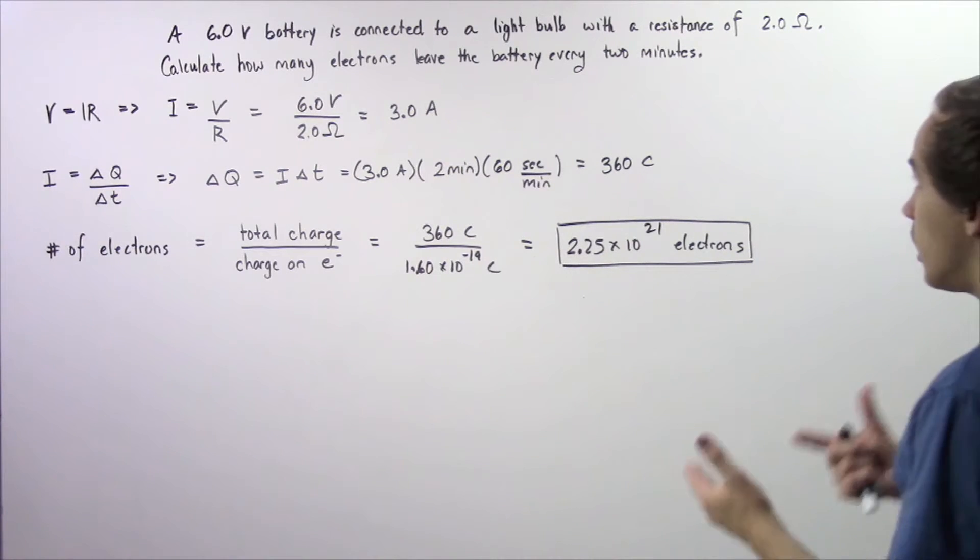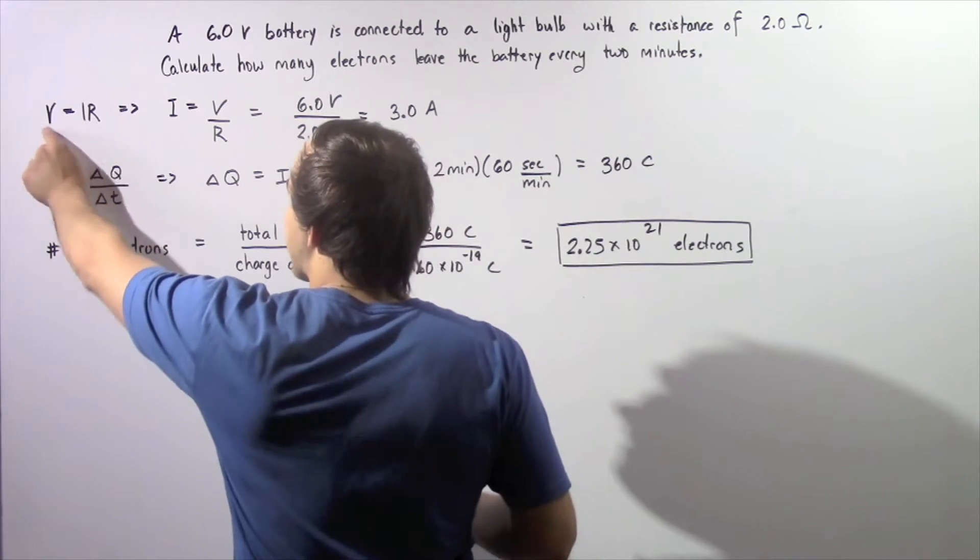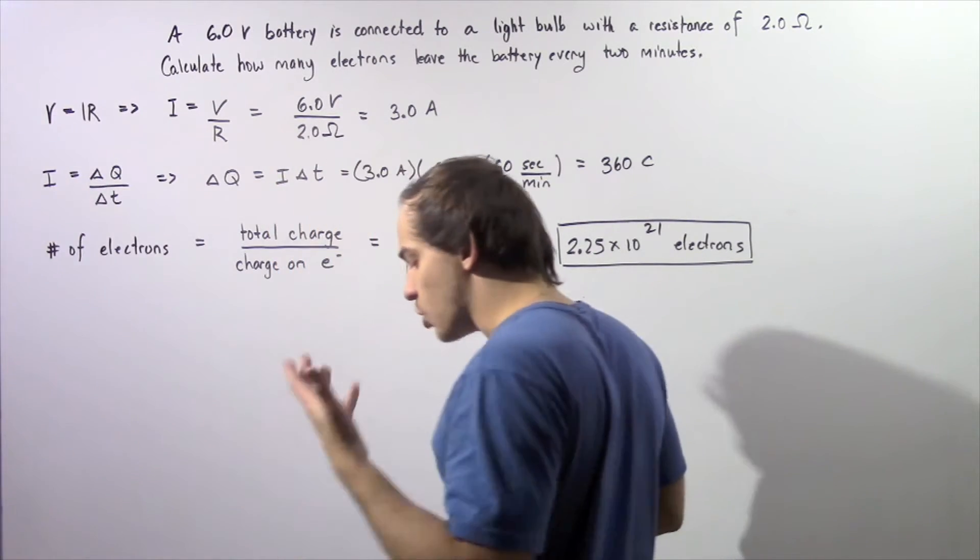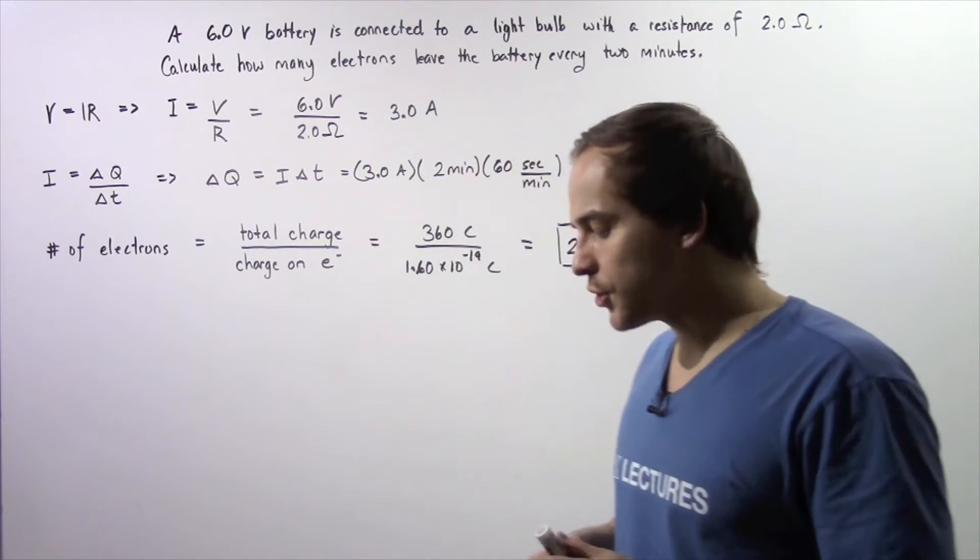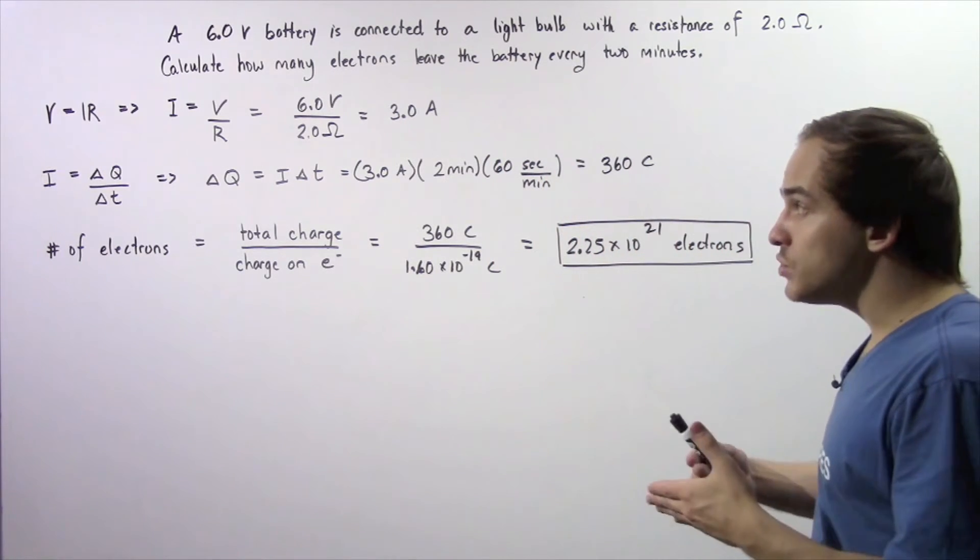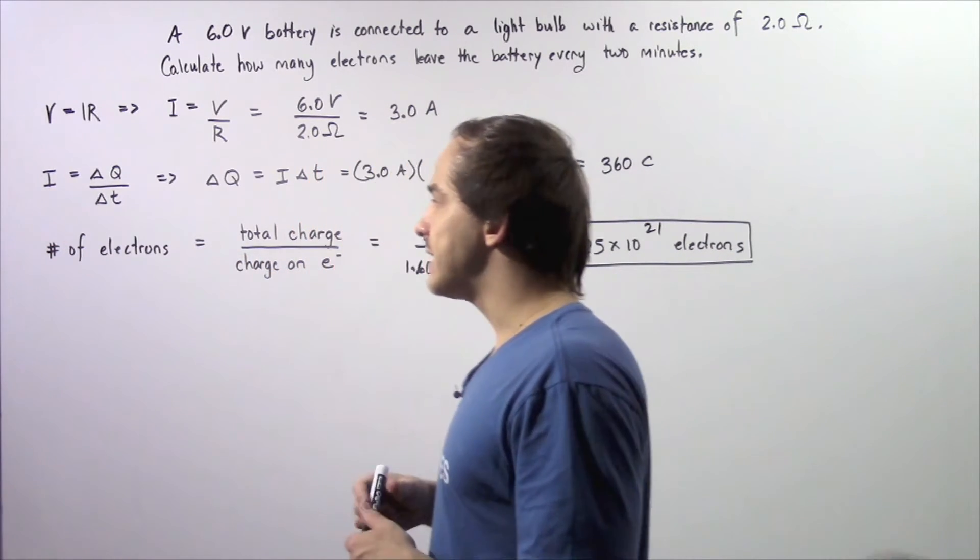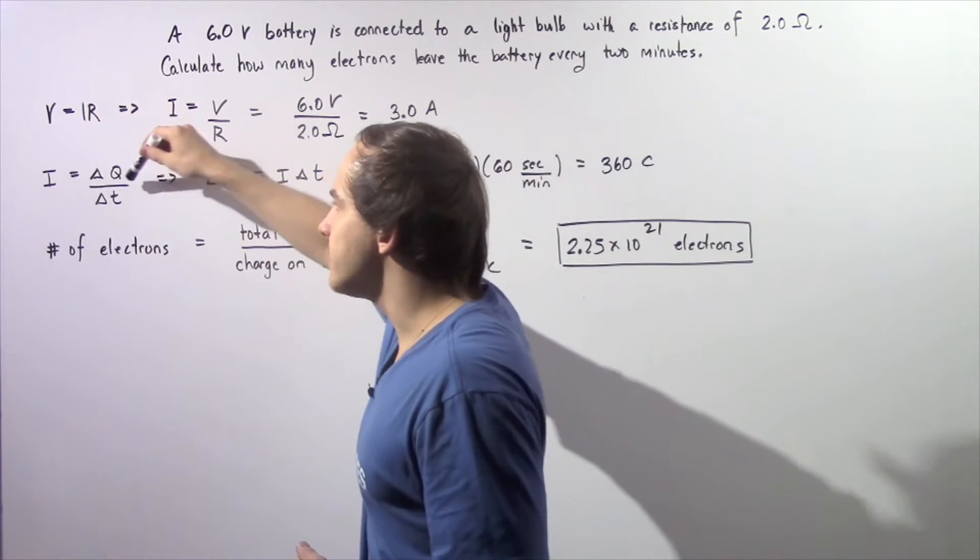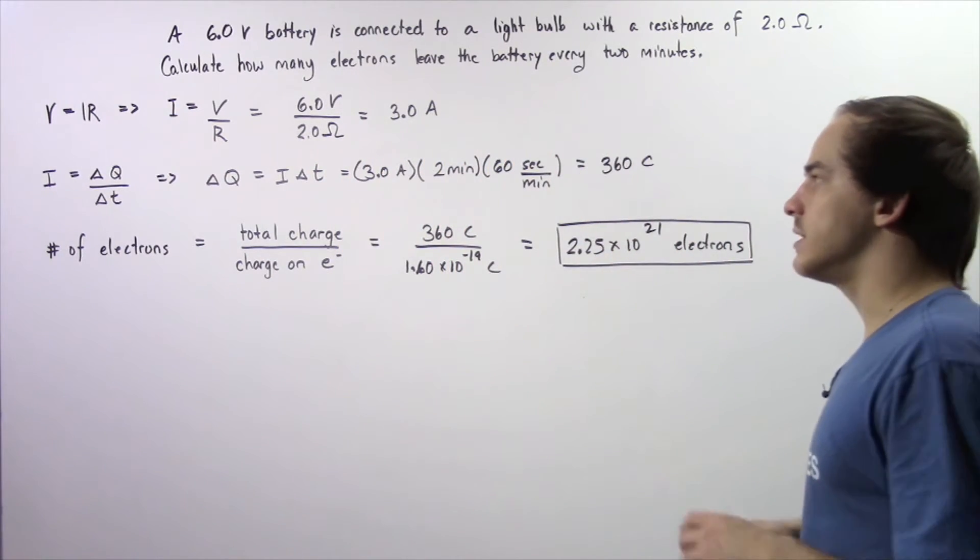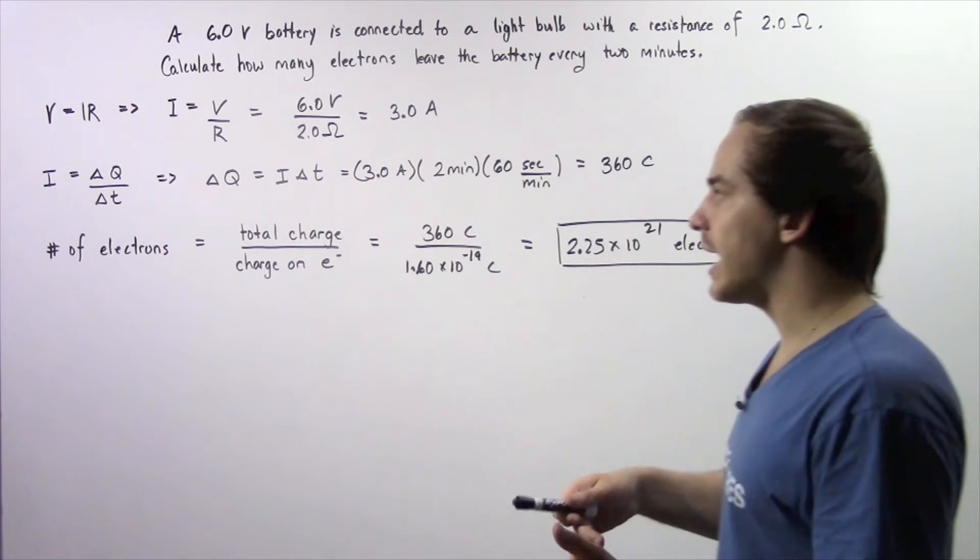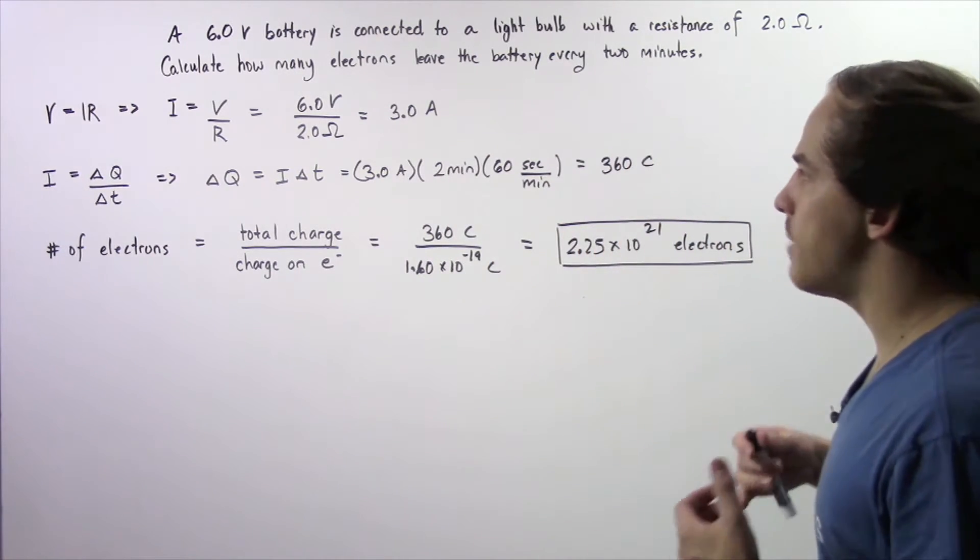Calculate how many electrons leave the battery every single 2 minutes, or 120 seconds. We want to use Ohm's Law to calculate what the electric current is within our electric circuit. Then by using the definition of our average electric current, we can calculate what the quantity of charge is that leaves our battery every 2 minutes. And then we can use that to calculate the number of electrons that leave our battery.